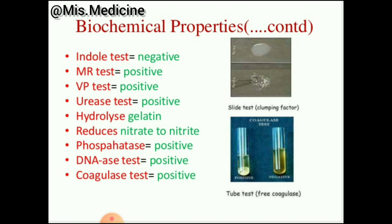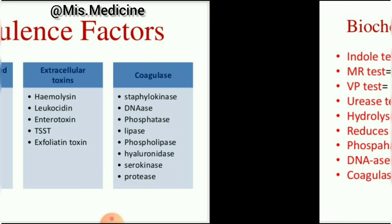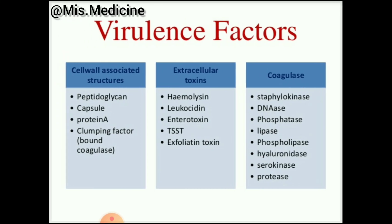Staph aureus is indole test negative, MR test positive, VP test positive, urease test positive, hydrolyzes gelatin, reduces nitrate to nitrite, phosphatase positive, DNase test positive, and coagulase test positive. In the slide test it shows clumping factor and in the tube test, free coagulase — that is why it shows catalase positive.